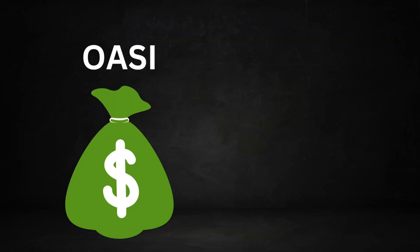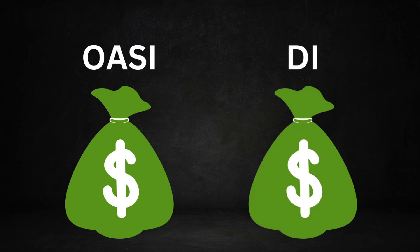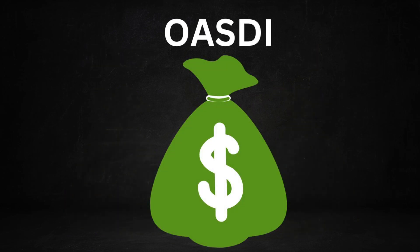There are two separate trust funds that handle Social Security's finances. There's the OASI trust fund, which stands for Old Age and Survivors Insurance. And then there's the DI trust fund, which stands for Disability Insurance. Although they are legally two distinct trust funds, they are often referred to collectively as the Social Security trust fund, and you'll often see the term OASDI used. For purposes of today's video, we're going to mostly be looking at these together and referring to both of them as the trust fund.